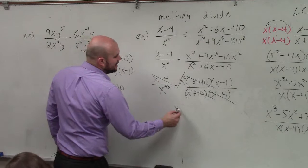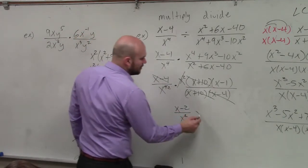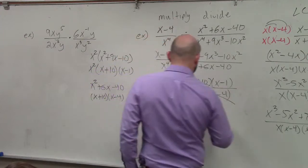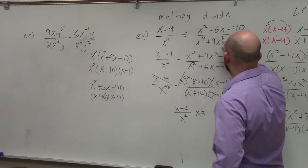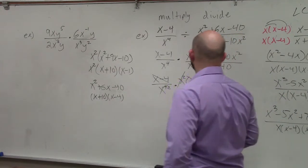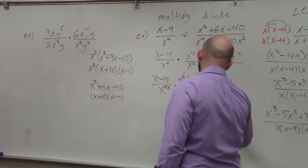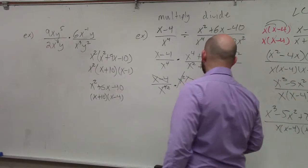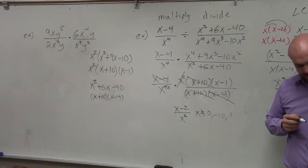So my final answer is x minus 1 over x squared, where x cannot equal 0, and what was originally in my denominator here, negative 10 and positive 4, because those were what was originally in my denominator there.